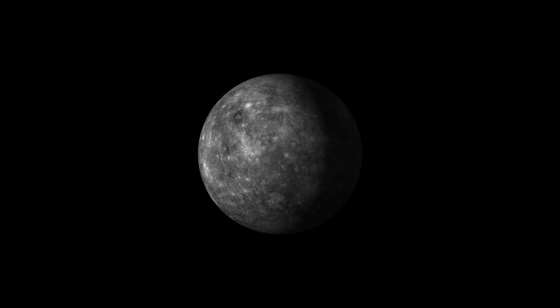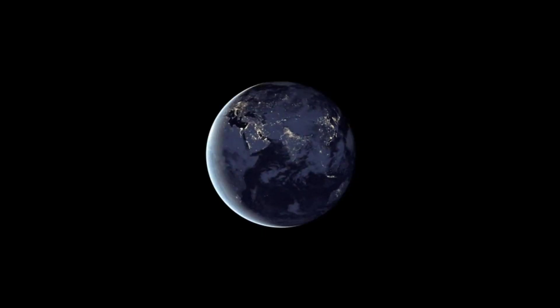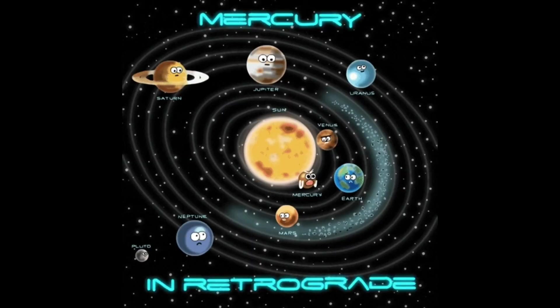Mercury, on average, is the closest planet to Earth. Although it never gets close to Earth like Mars or Venus, it doesn't stray as far as those planets when comparing entire orbits to the distance from Earth.